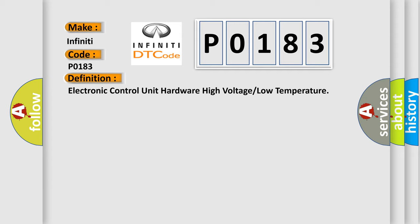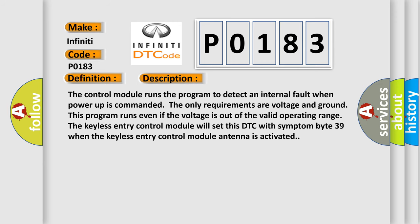And now this is a short description of this DTC code. The control module runs the program to detect an internal fault when power-up is commanded. The only requirements are voltage and ground. This program runs even if the voltage is out of the valid operating range. The keyless entry control module will set this DTC with symptom byte 39 when the keyless entry control module antenna is activated.